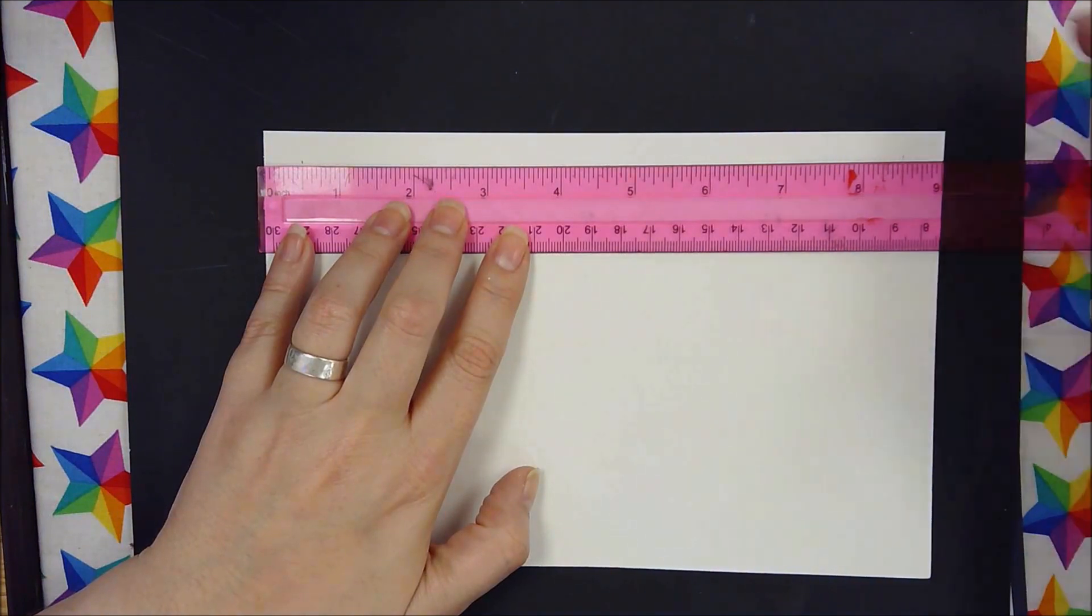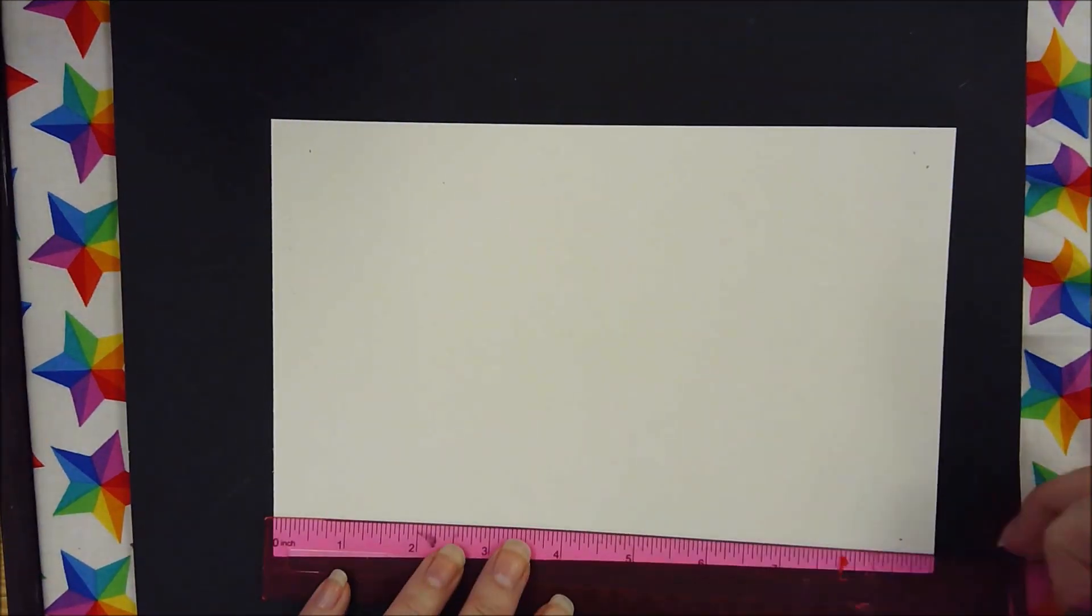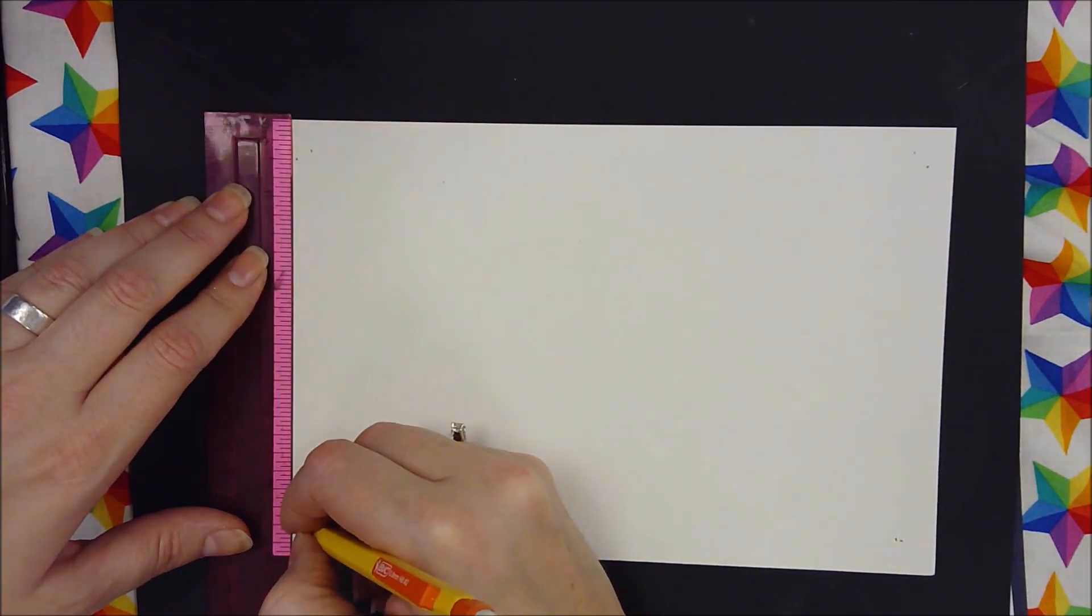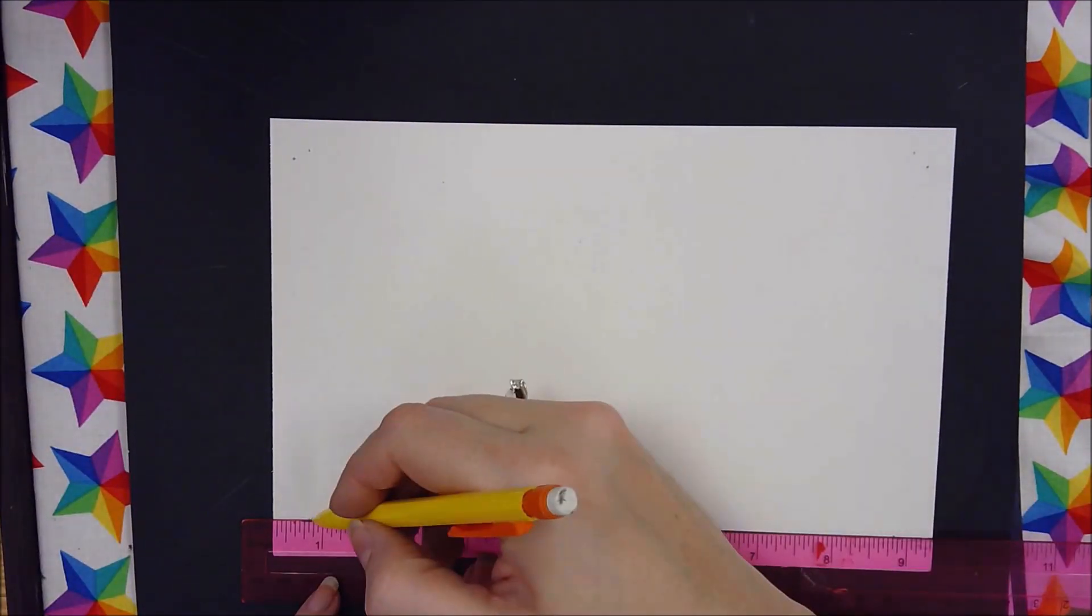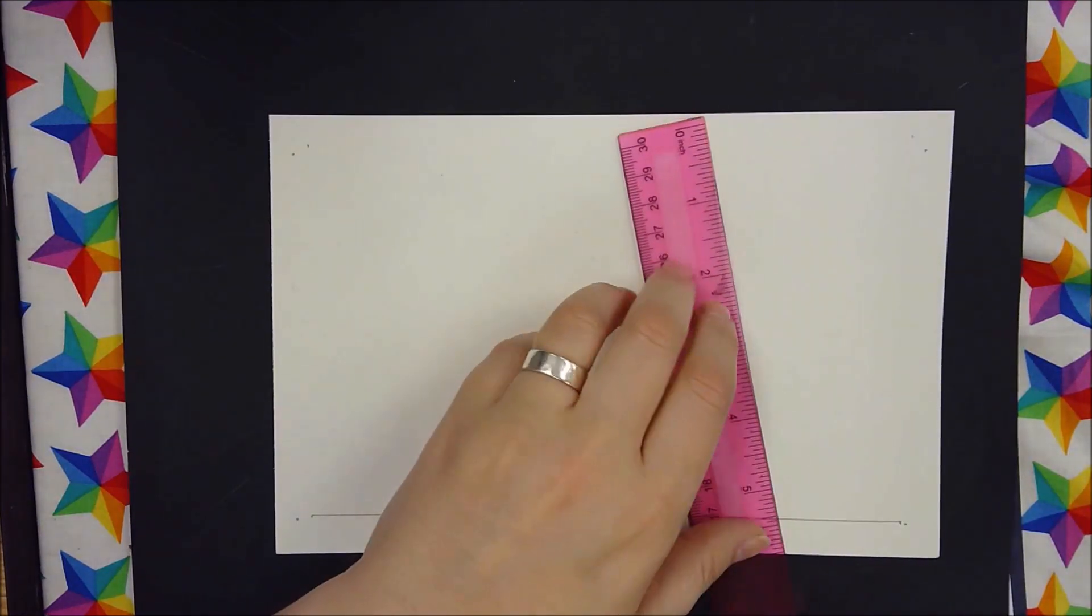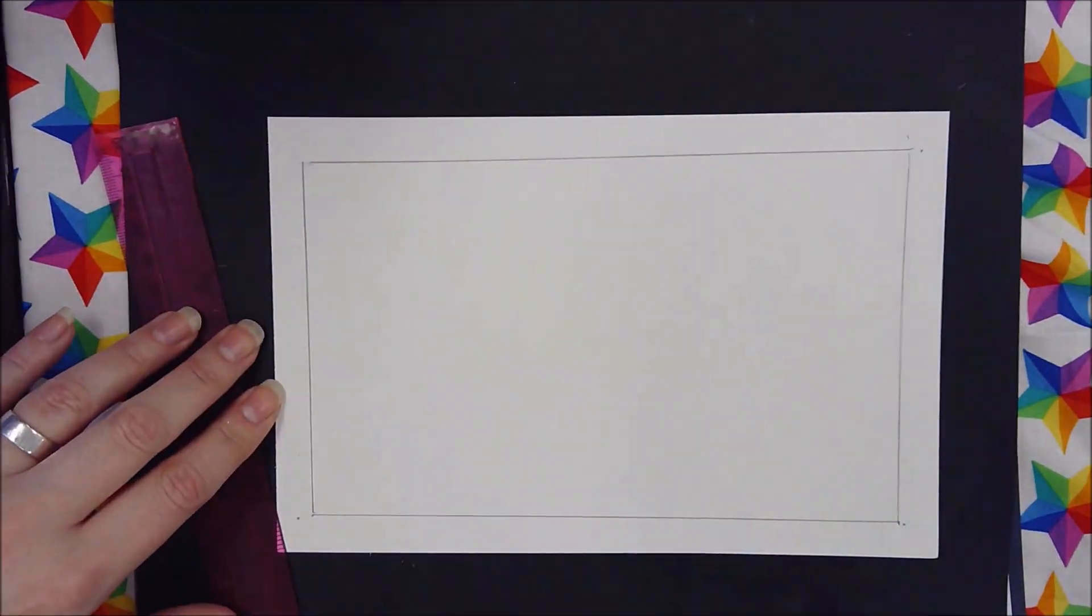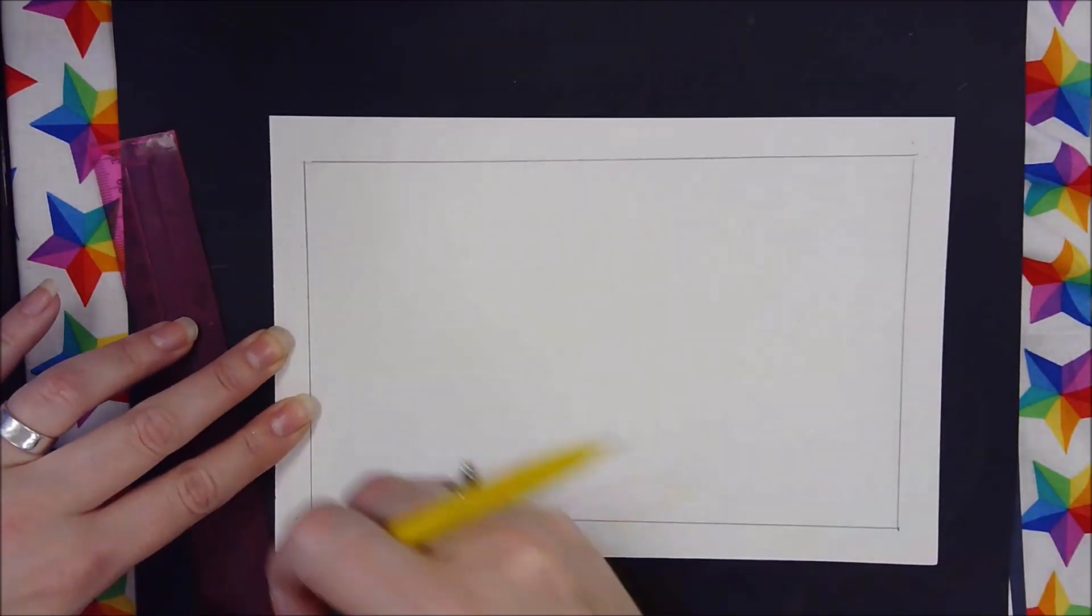We're going to repeat this on the other side, but this time between a half an inch and six inches. Repeat on all four sides. Lay your ruler down between dots and draw your border in again on all four sides. Erase where needed.